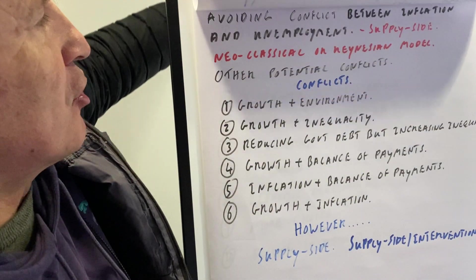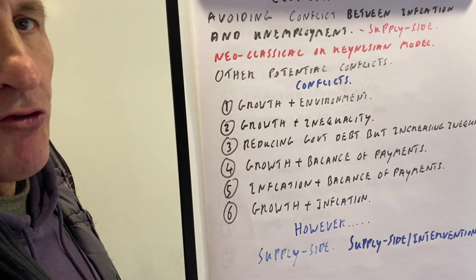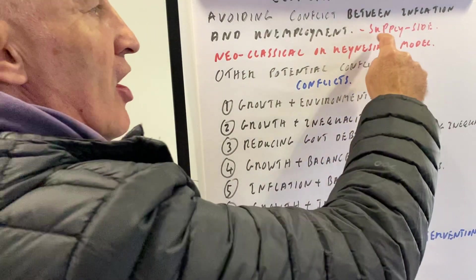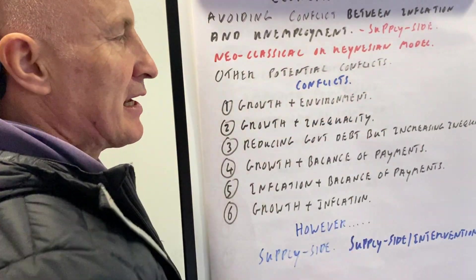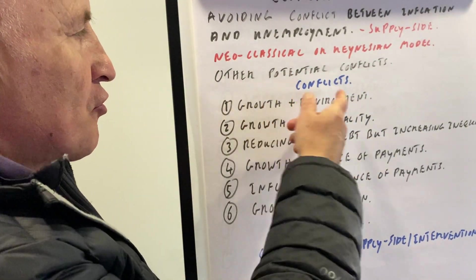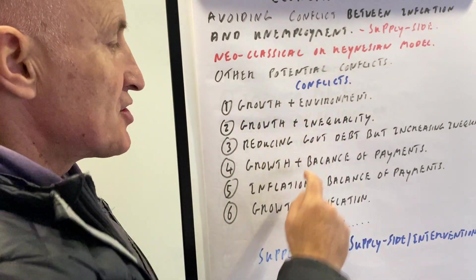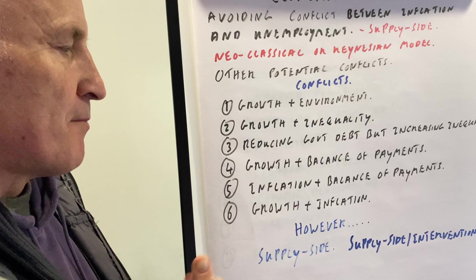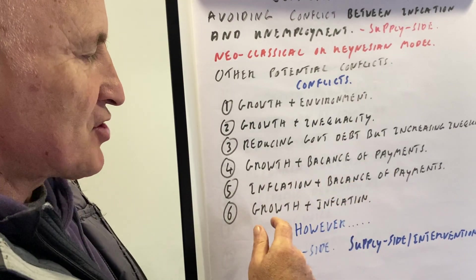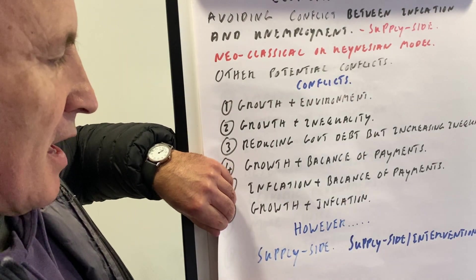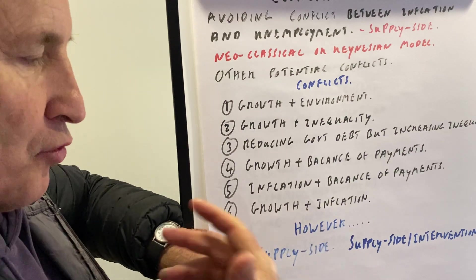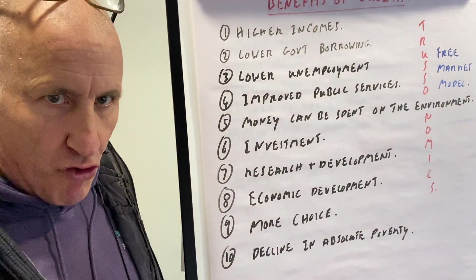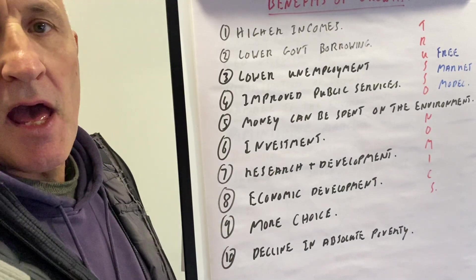Now we're going to look at economic growth — why is economic growth a good thing, and how can we avoid conflict between inflation and employment? Clearly the answer is supply-side economics, whether neoclassical or interventionist. Other potential conflicts include growth and the environment, growth and inequality, reducing government debt but increasing inequality, growth and the balance of payments, and growth and inflation. However, if you pursue supply-side policies, these conflicts may not occur.